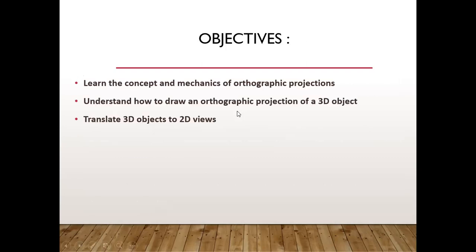What are the different objectives of orthographic projection? Understanding the concept and mechanism of orthographic projection with reference to different views like top view, front view, and side view. Providing an opportunity to draw an orthographic projection of a 3D object by following the first angle projection method, then translating a given 3D object into 2D views. These are some of the learning objectives of orthographic projection.